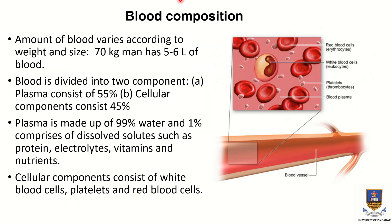Regarding blood composition, the amount of blood varies according to weight and size. A 70 kg man has 5 to 6 liters of blood. Blood is divided into two components: the plasma component, which constitutes 55 percent and is the fluid part of blood.